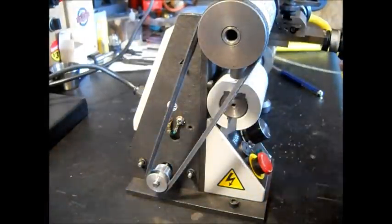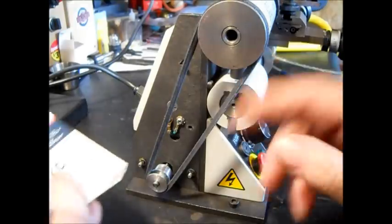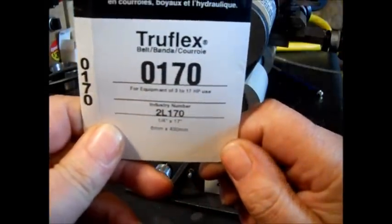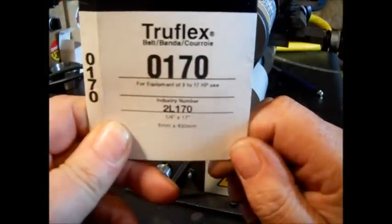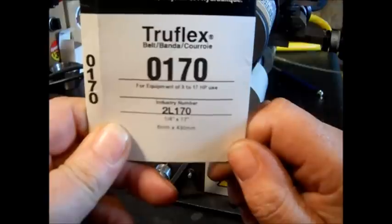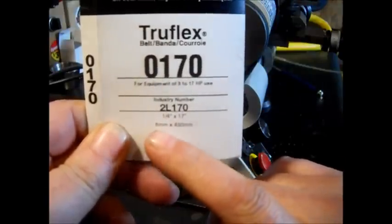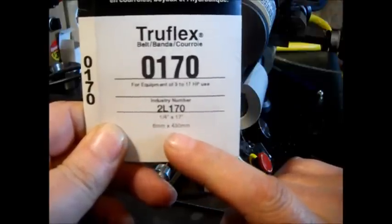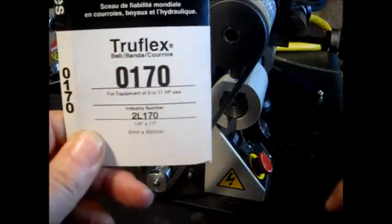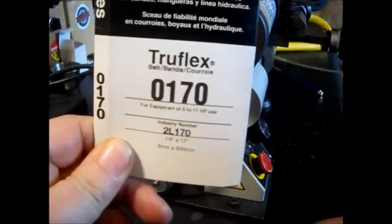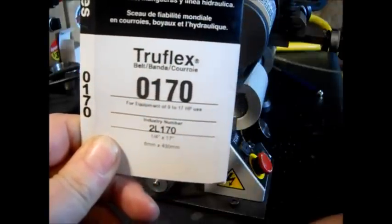Well, this is what we came up with. This is 17, but it's 1/4 inch wide. I'll pause this here. It's like for equipment of 3 to 17 horsepower, that's an industry number. It's 1/4 inch by 17 inches, 6 millimeter wide by 430 millimeters long. Okay? That's the best we could come up with, because there was a 16 or a 17, and we went with a 17.